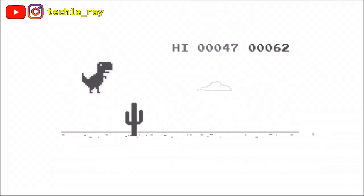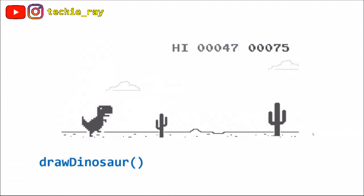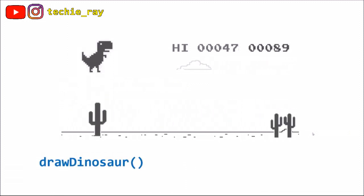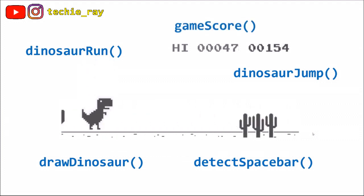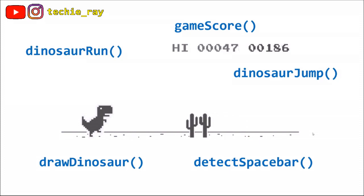For example, there's a function that draws a dinosaur to the screen, a function that allows the dinosaur to run, a function that listens whenever you press a spacebar so the dinosaur can jump, a function that keeps track of the score, etc. All these functions work together to bring the game to life.